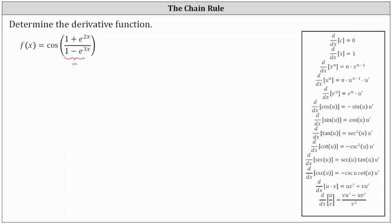We can think of the function f of x as just cosine u when determining the derivative. The derivative of cosine u with respect to x is equal to negative sine u times u prime. So if we let u equal the quotient function, we do have to find u prime or du dx to apply the chain rule. So let's work on determining u prime — to find u prime, we will have to apply the quotient rule of differentiation.